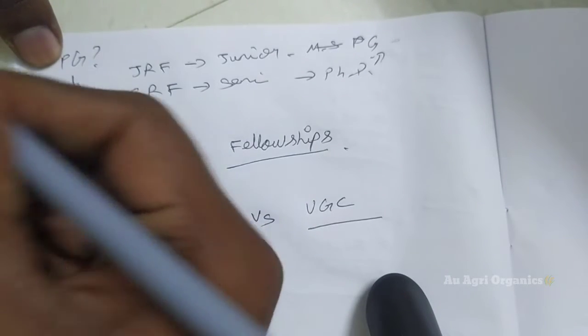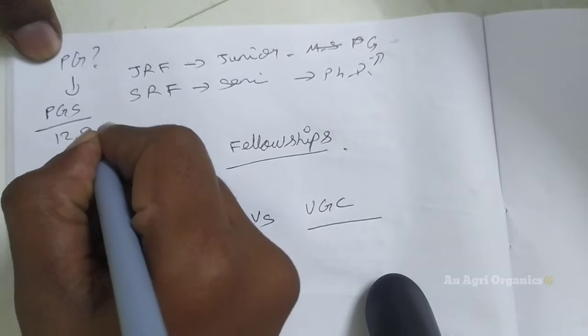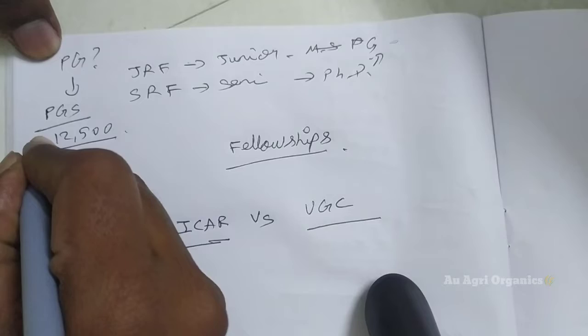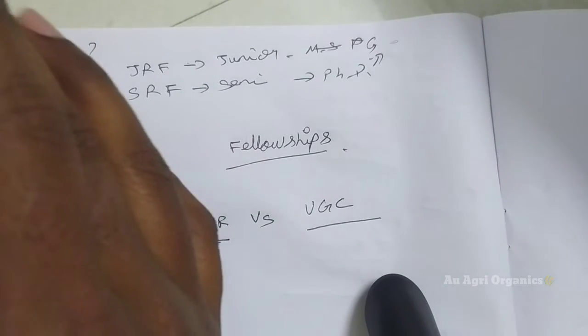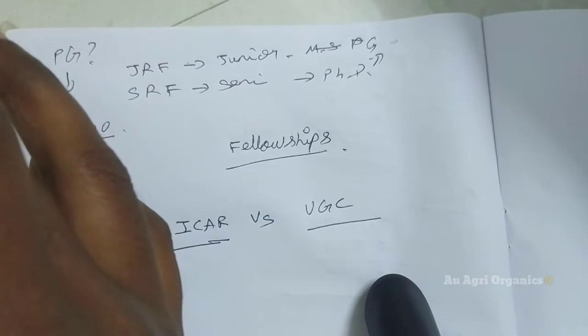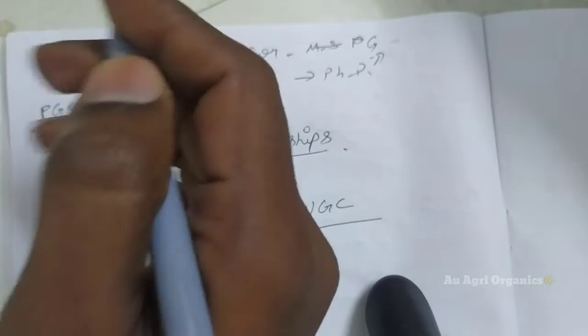For this PG, if you are selecting through ICAR, you will get around 12,500 rupees per month. So this is PG scholarship. This is not JRF. ICAR has changed that name from JRF to PG scholarship by the year 2018 or 19. But still everyone is following the same name, JRF. I have uploaded many videos regarding that. But no one is following.